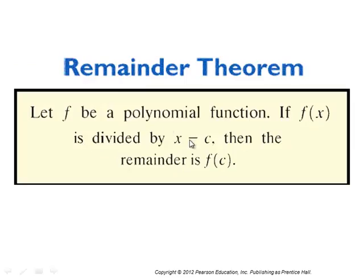The remainder theorem basically says this: let F be a polynomial function. If F(x) is divided by the linear factor x minus c — where c is a number — then the remainder is F(c). That's pretty easy to prove, and if you're interested in the proof, it's in the textbook.